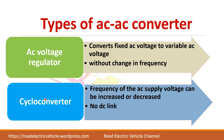The second type is a cycloconverter, which can change the frequency of the AC supply with no need for a DC link. Normally, to connect two different frequency systems — say 50 Hz to 60 Hz — a rectifier converts AC to DC, and that DC link is fed to an inverter to produce the new frequency. A cycloconverter directly converts one frequency to another without any DC link.